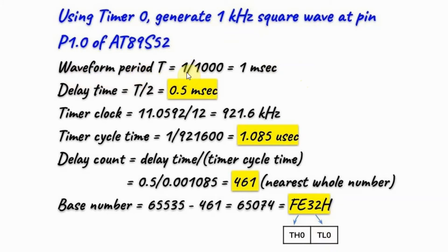We start with the waveform period which is the reciprocal of the frequency, in this case 1 millisecond. Then we calculate the delay time which is the time it takes for the overflow interrupt to occur, which is half of the period, in this case 0.5 milliseconds. Then we calculate the timer clock which is the crystal clock frequency divided by 12, here we have 921.6 kHz. Then we find the timer cycle time which is the reciprocal of the timer clock, in this case 1.085 microseconds. Then we find the delay count which is the delay time divided by the timer cycle time and we get 461, of course we take the nearest whole number. So the base number would be 65535 minus this delay count which gives us this value. We translate it into hexadecimal and save it inside the timer 0 register.